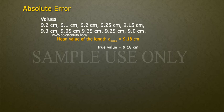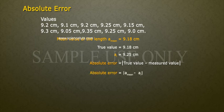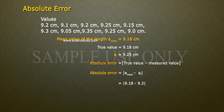Take one measured value equal to 9.25 cm. Absolute error is equal to modulus of true value minus measured value. Therefore, absolute error is equal to a_mean minus a_i, or a_1 is equal to 9.18 minus 9.2, that is equal to 0.02.